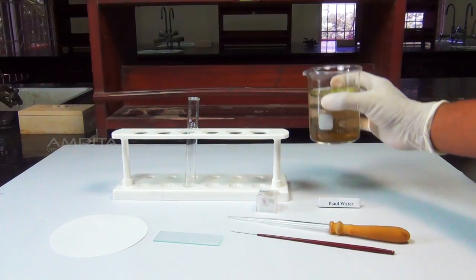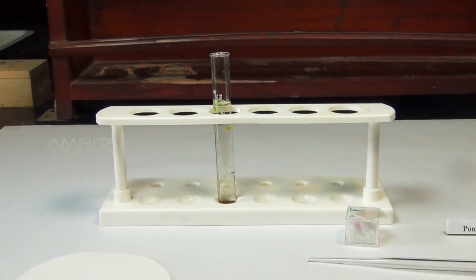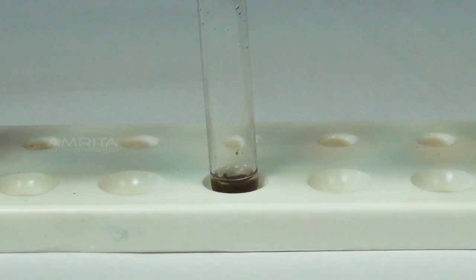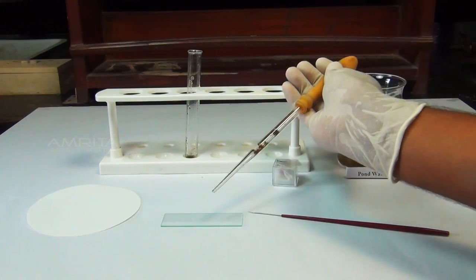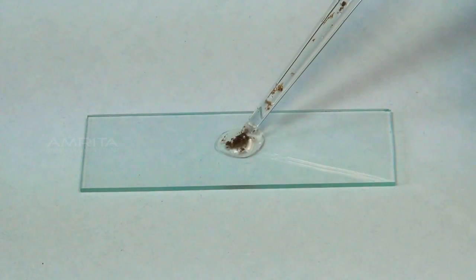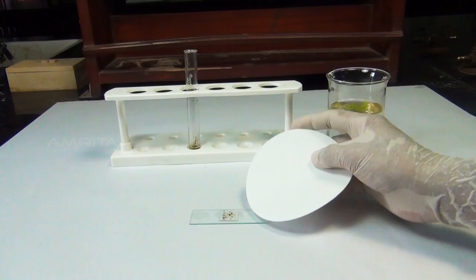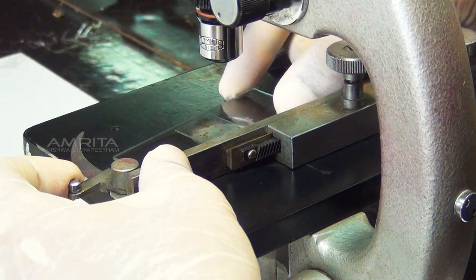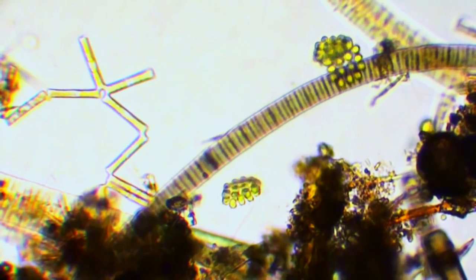Procedure: Take a beaker containing pond water and pour it into a test tube. Leave the water sample undisturbed till the sediment settles to the bottom of the test tube. Decant the clear water, leaving concentrated sediment at the bottom. With the help of a dropper, transfer a drop of water from the test tube to the center of a glass slide. Take a cover slip and place it gently on the slide with the aid of a needle. Remove the extra water using a filter paper. Place this glass slide on the stage of the compound microscope and view it. Observations: We can observe a large number of different organisms in water sample.